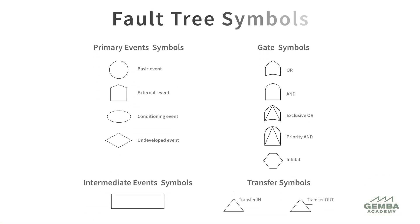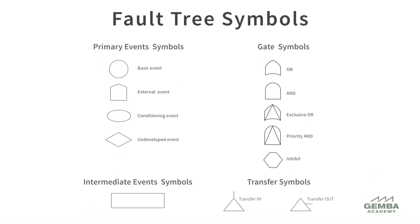These gates are logic symbols that connect events and conditions. If two input events must both occur for an output event to occur, they are both connected by an AND gate. If only one of the two input events must occur for an output event to occur, they are connected by an OR gate.